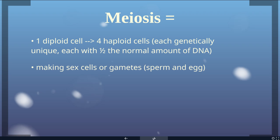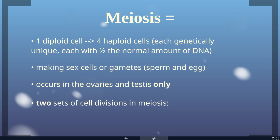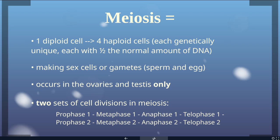Meiosis is the process of making sex cells or gametes. It occurs only in the ovaries and testes. In meiosis we have two sets of cell divisions: we go through prophase, metaphase, anaphase 1, and then a whole second set — prophase, metaphase, anaphase, telophase 2 — so that we end up with 4 cells.